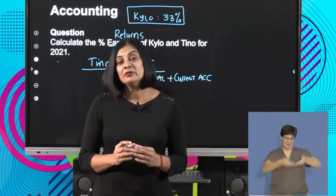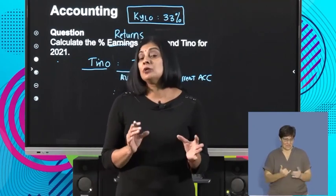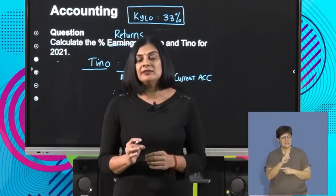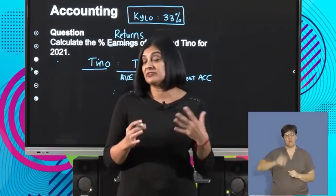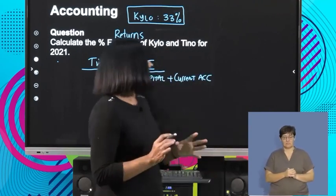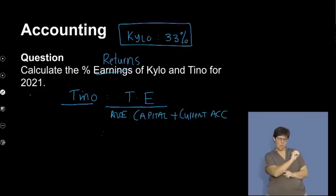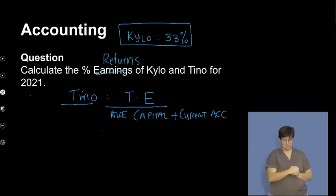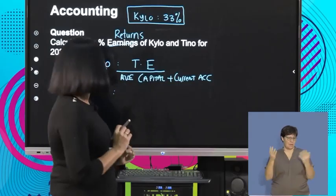Welcome back, accounting students. Welcome to the final segment of today's show. Remember, we're busy with analysis and interpretation, and we were looking at the percentage earnings or the percentage return of our partners. Before the ad break, we calculated that Kylo's percentage return was sitting at 33%. We now can move on to our next partner, which is Tino's percentage earnings or percentage return.